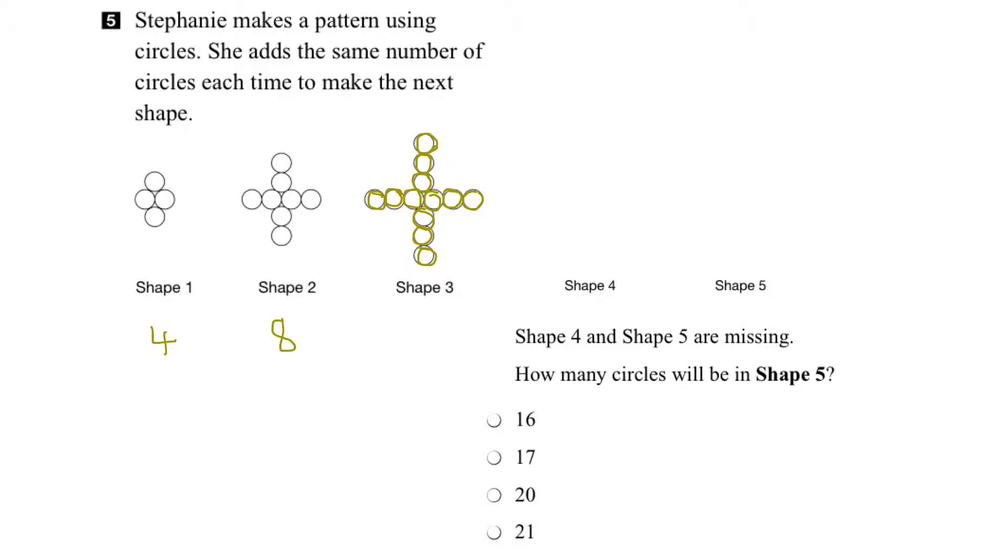So that gives us a total of 12 circles in shape 3. Alright, let's keep going.